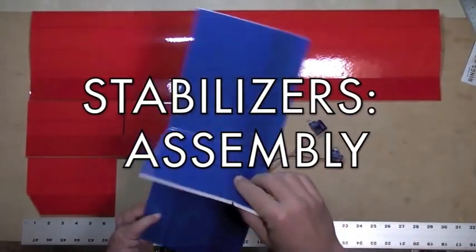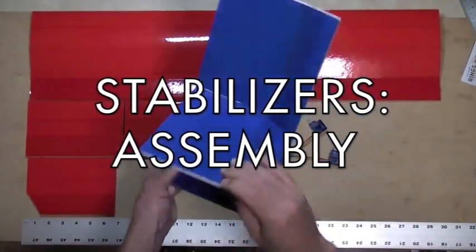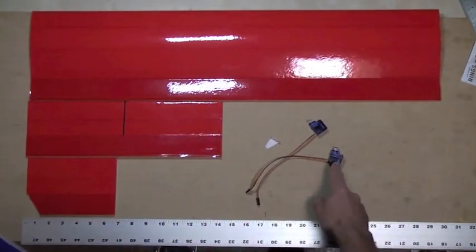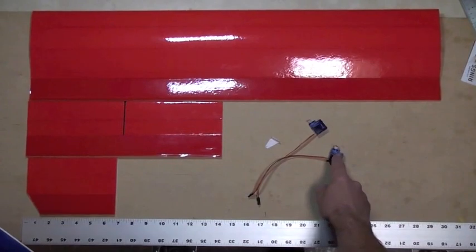Now it's time to assemble your very basic horizontal and vertical stabilizer with elevator, with or without a rudder, and apply your control horns and servos.